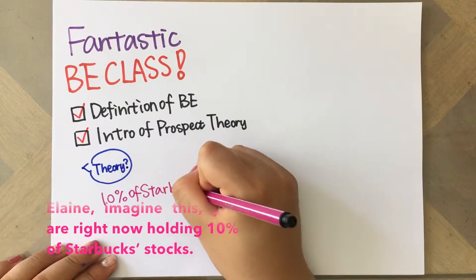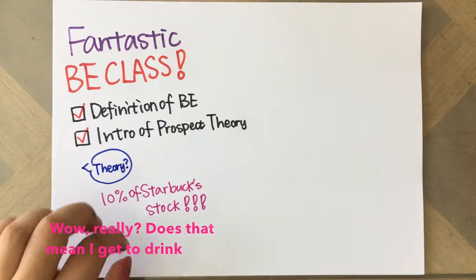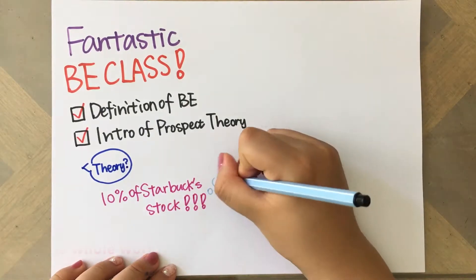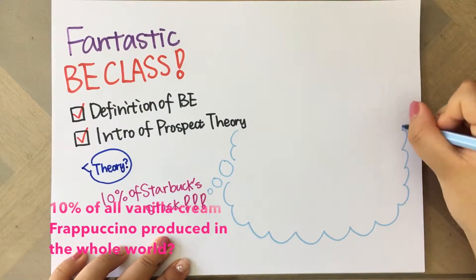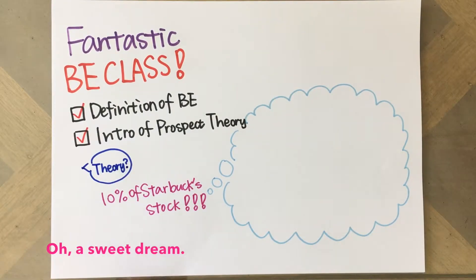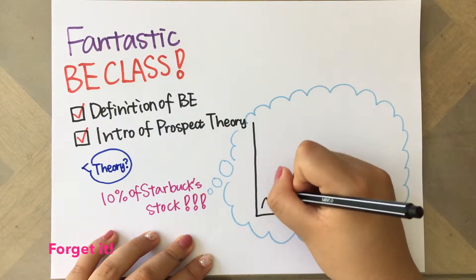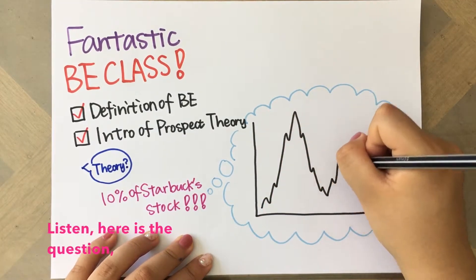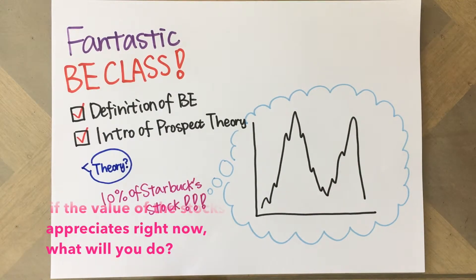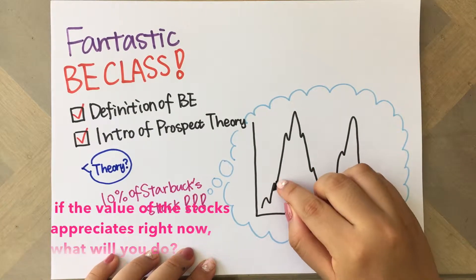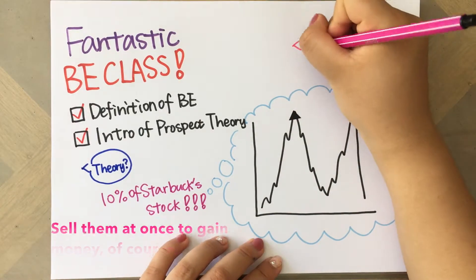Elaine, imagine this — you're right now holding 10% of Starbucks stocks. Does that mean I get to drink 10% of all vanilla cream Frappuccino produced in the whole world? Didn't you just promise to go on a diet last night? Forget it! Okay, here is the question: if the value of the stocks appreciates right now, what would you do? Well, sell them at once to gain money, of course.